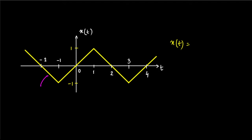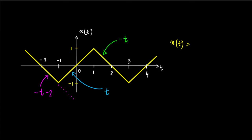Let's define the signal piecewise. The first line segment, from minus two to minus one, has a slope of minus one and an intercept of minus two, giving minus t minus two. The middle segment, from minus one to plus one, has a slope of plus one and intercept of zero, giving just t. The last segment, from one to two, has a slope of minus one and intercept of plus two, giving minus t plus two.